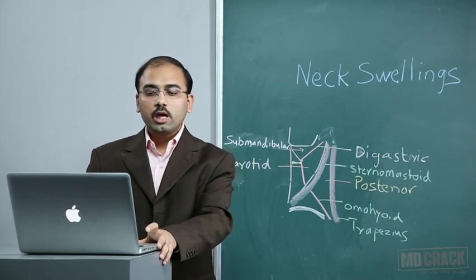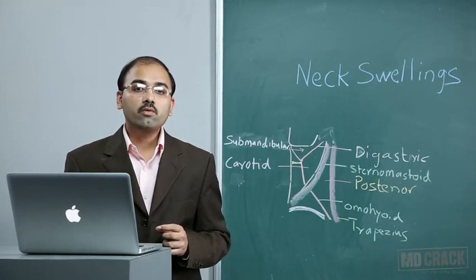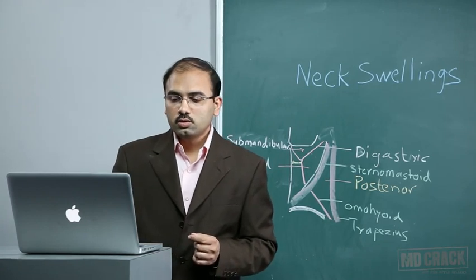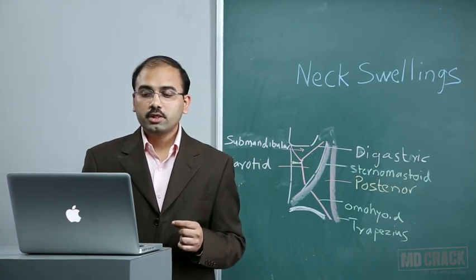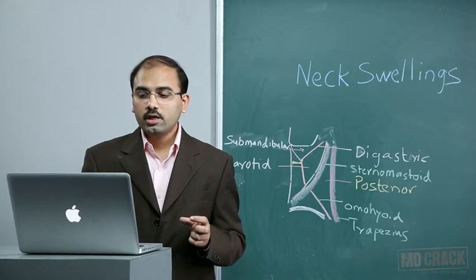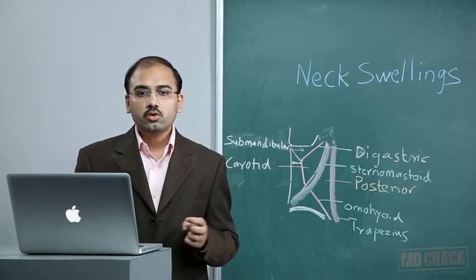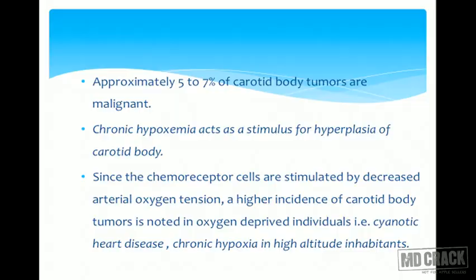Regarding the origin of carotid body tumor: chronic hypoxemia acts as a stimulus for hyperplasia of carotid body cells. Since chemoreceptor cells are stimulated by decreased oxygen tension, a higher incidence is noted in oxygen-deprived individuals such as cyanotic heart disease patients or people living at high altitudes where chronic hypoxia is present.